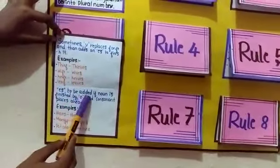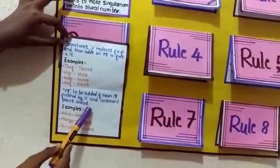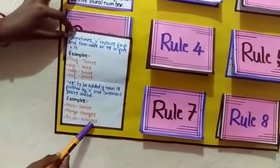Another one: ES to be added if noun is finished by O and consonant places ahead. Examples: hero-heroes, mango-mangoes, potato-potatoes, etc.